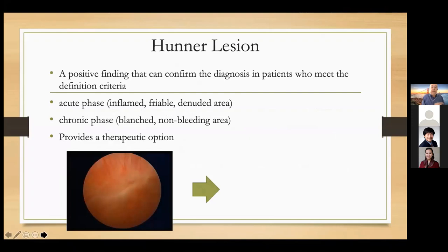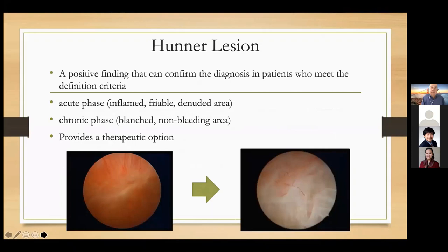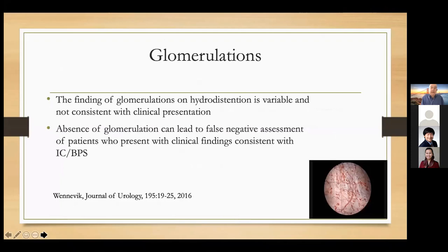Hunter lesion is a positive finding that can confirm the diagnosis in patients who meet the definition criteria. In its acute phase, it's an inflamed, friable, denuded area; in its chronic phase, it's blanched and non-bleeding. It can provide a therapeutic option with fulguration, steroid injection, cauterization, or resection. The finding of glomerulations on hydrodistension is variable and not consistent with clinical presentation. Absence of glomerulations can lead to false-negative assessment of patients who present with clinical findings consistent with IC/BPS. So we no longer use glomerulations.